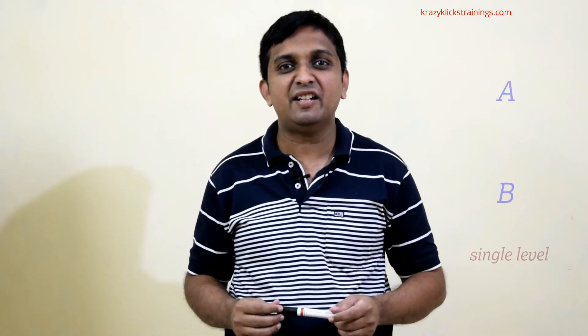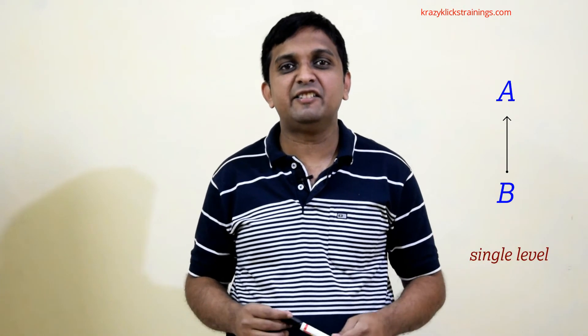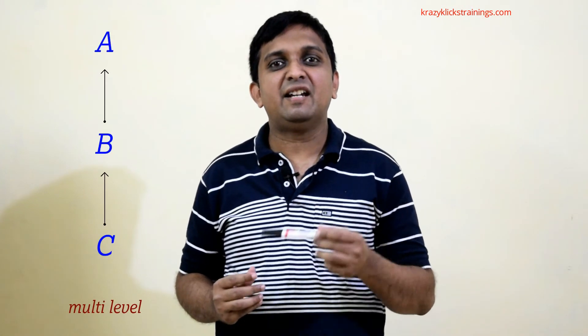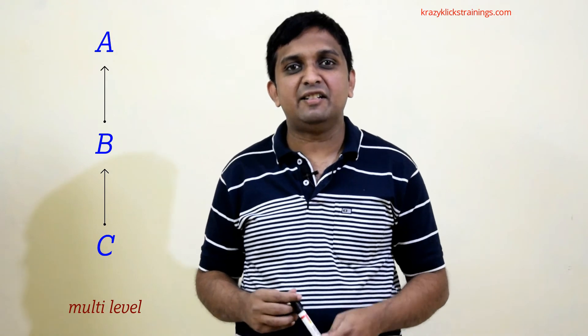Depending on implementation, there are different types of inheritance. The first type is single-level inheritance, where class B inherits class A. The second type is multi-level inheritance, where class B inherits class A and class C inherits class B, forming a chain.